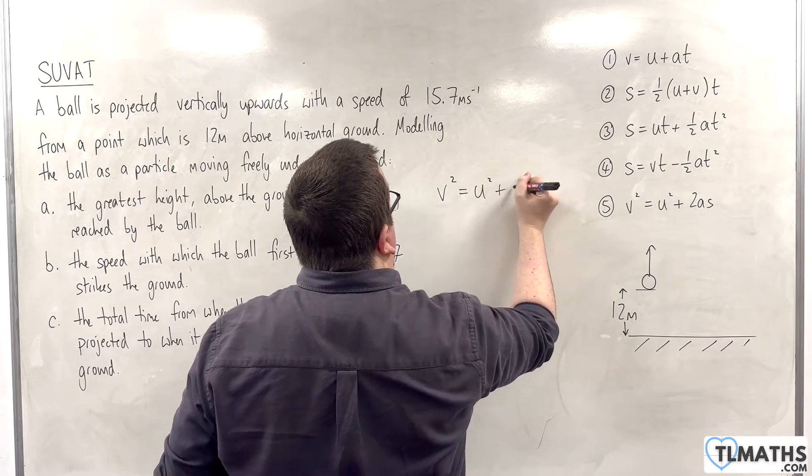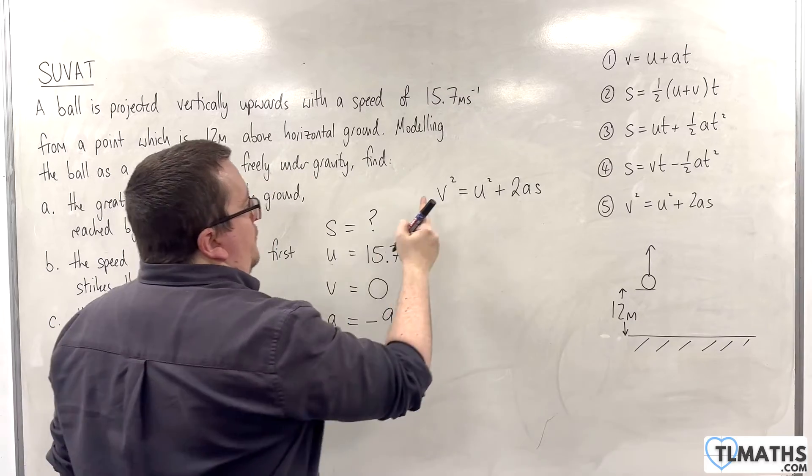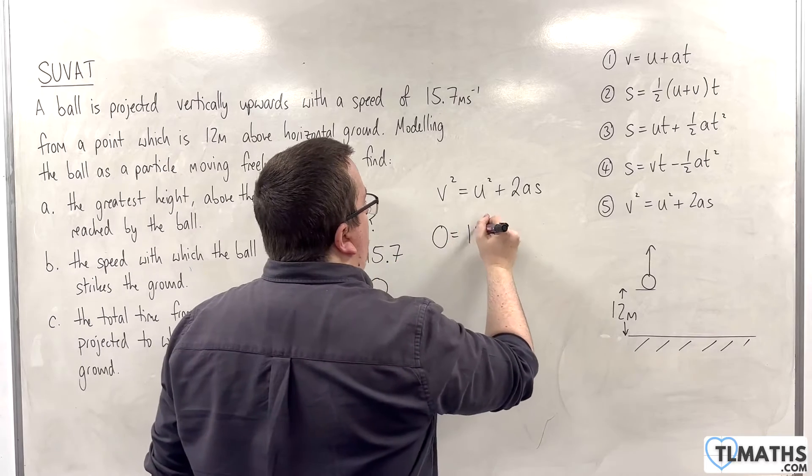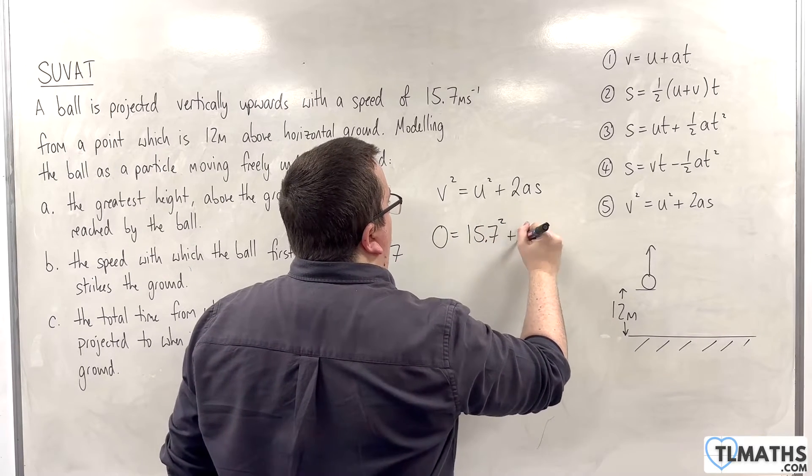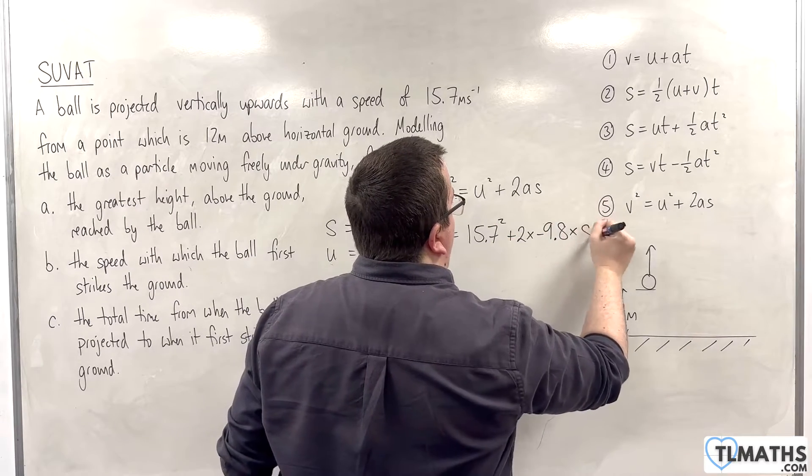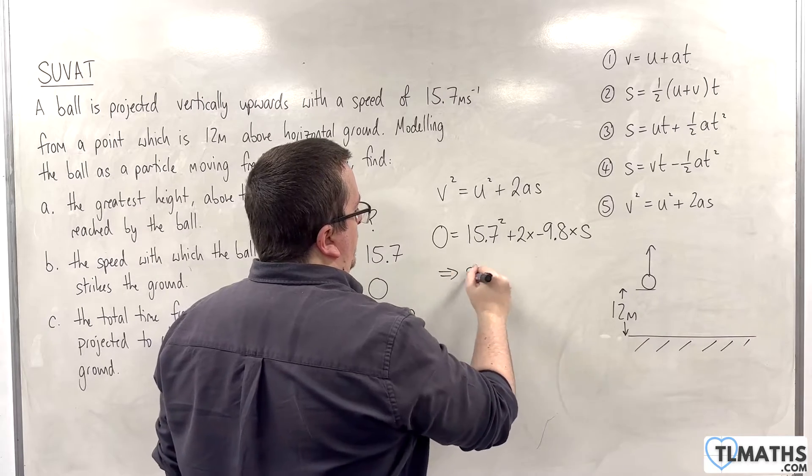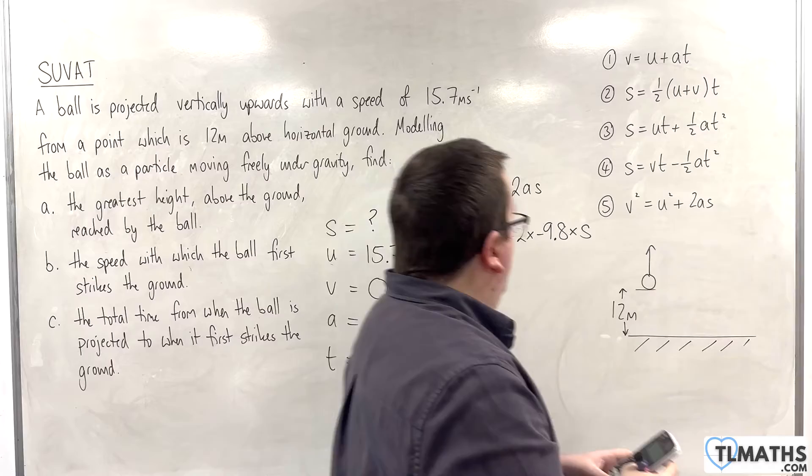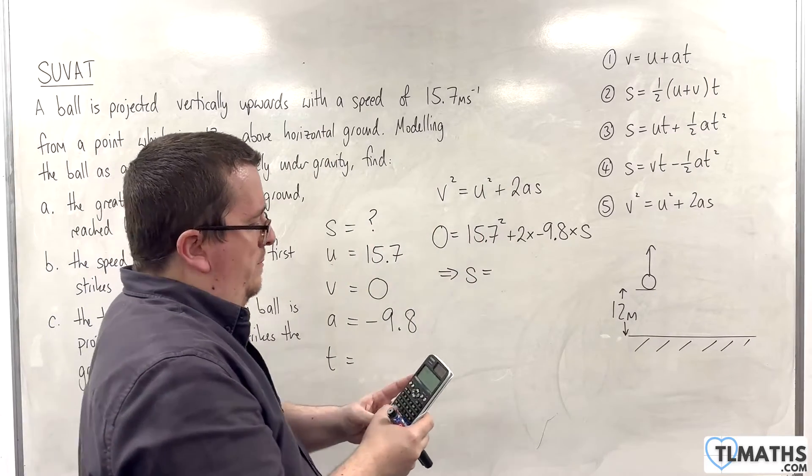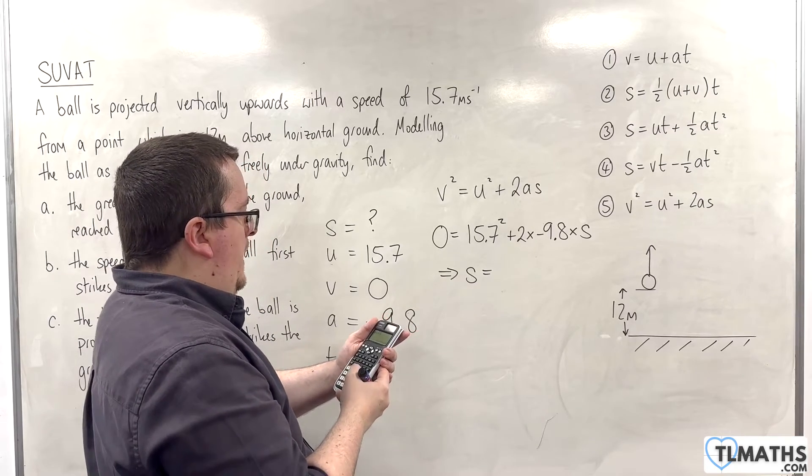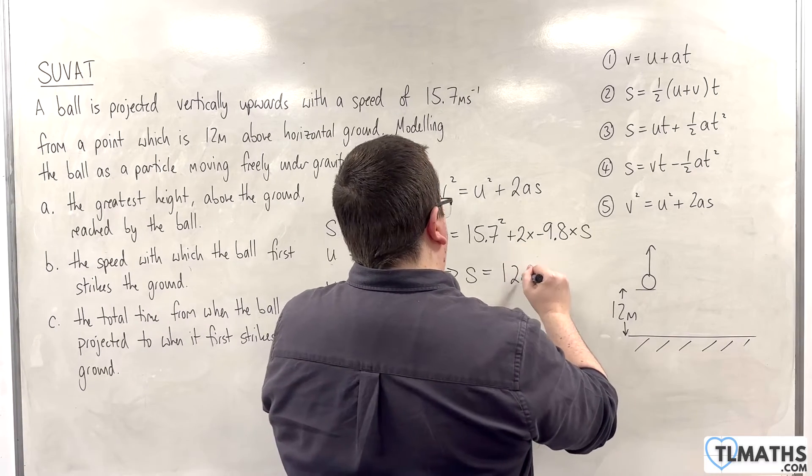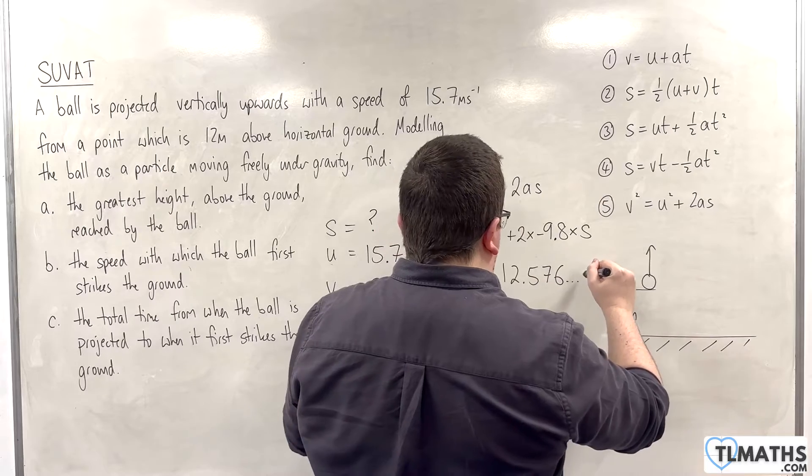V squared is zero squared. U squared is 15.7 squared, plus 2 lots of A, which is minus 9.8, times by S. So, we have 15.7 squared, divided by 2, divided by 9.8, when we rearrange it. And we should get 12.576 metres.